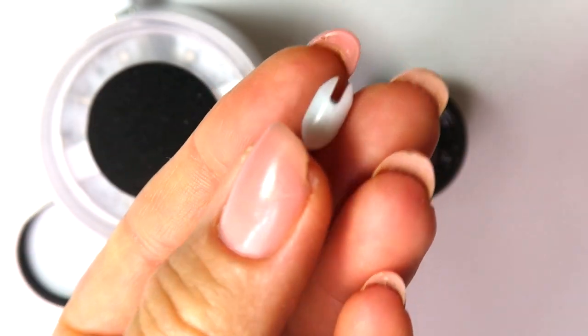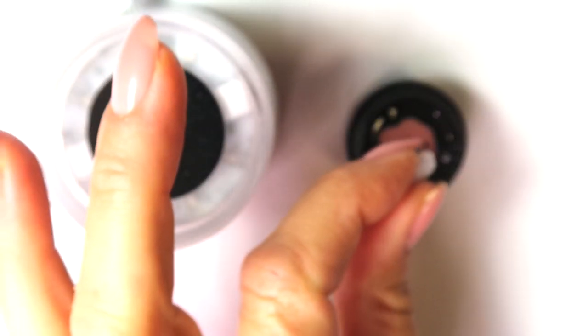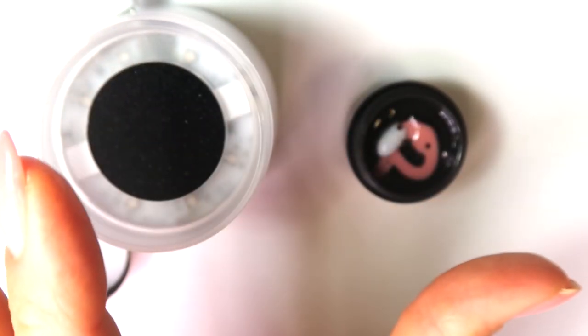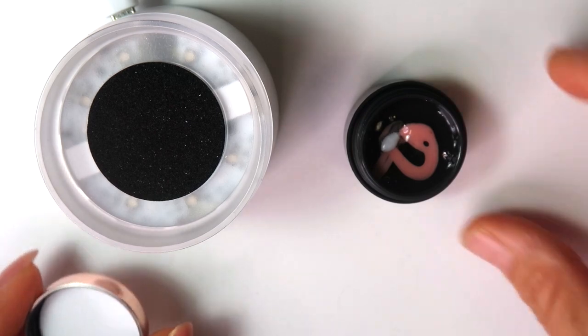So you just take that and you twist it off and just go ahead and drop that little—it's like a little magnet, pretty much is what it is. So you're going to drop that into your pot and we're going to go ahead and close this guy up.